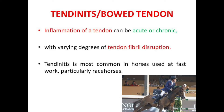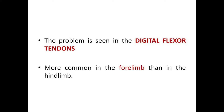Now we will look at tendinitis or bow tendon. It is the inflammation of a tendon. It can be acute or chronic, with varying degrees of tendon fibril disruption. Tendinitis is most common in horses used at fast work, particularly racehorses. The problem is seen more commonly in the digital flexor tendons and more commonly in the forelimb than in the hindlimb.